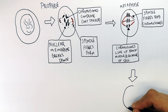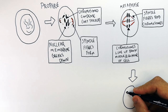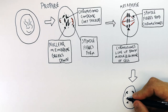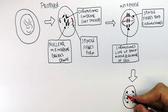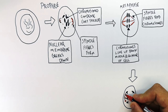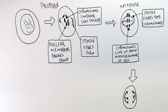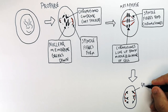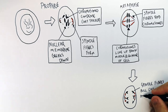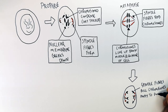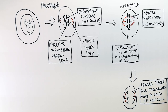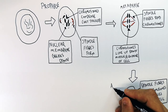Anaphase is the next stage — the third stage of mitosis. As you can see here, the chromosomes are being pulled to either side of the cell by the spindle fibers. The chromosomes are now moving away from the middle to the poles of the cell. So the spindle fibers pull chromosomes away to the poles of the cell. That's anaphase.